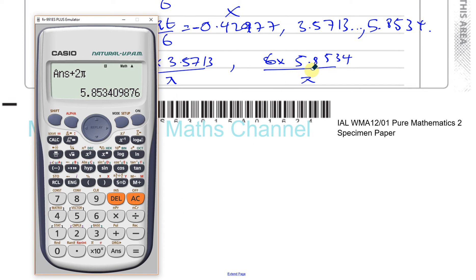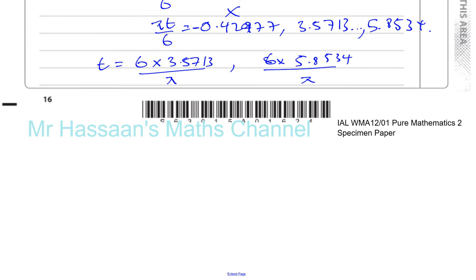So let's see what we have. So I've got this one already saved. So I'll do times 6 divided by pi. That gives me 11.179.